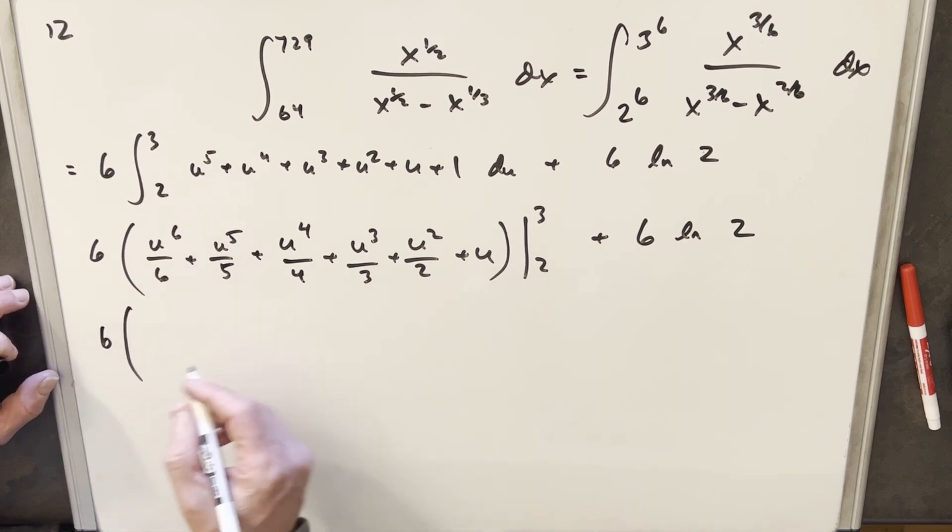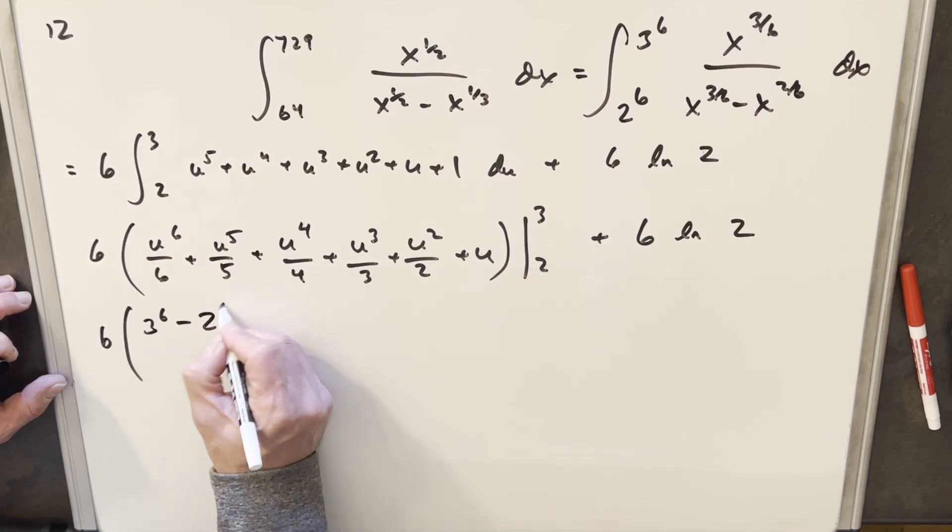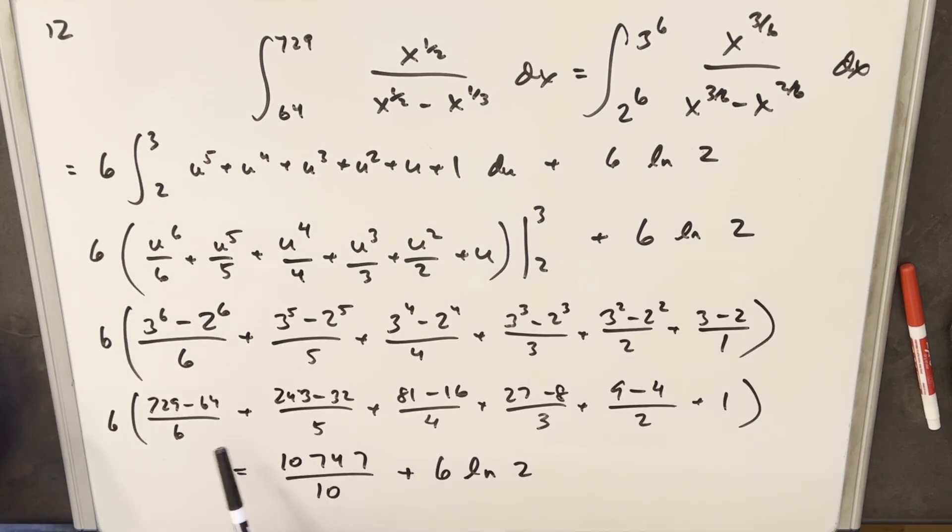Instead of writing this out as 12 terms let's write it like 3 to the 6th. When we're evaluating 2 we're going to be subtracting. So I'm going to write it like 3 to the 6 minus 2 to the 6 over 6. With this last row I got a common denominator of 10. Add it all together you get 10,747 over 10 plus 6 natural log of 2. And that's it.